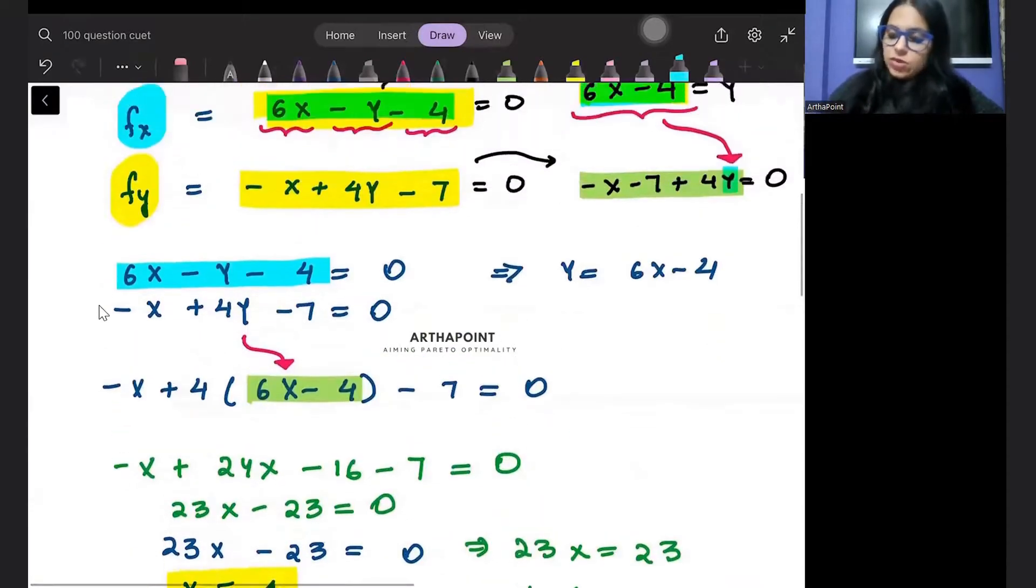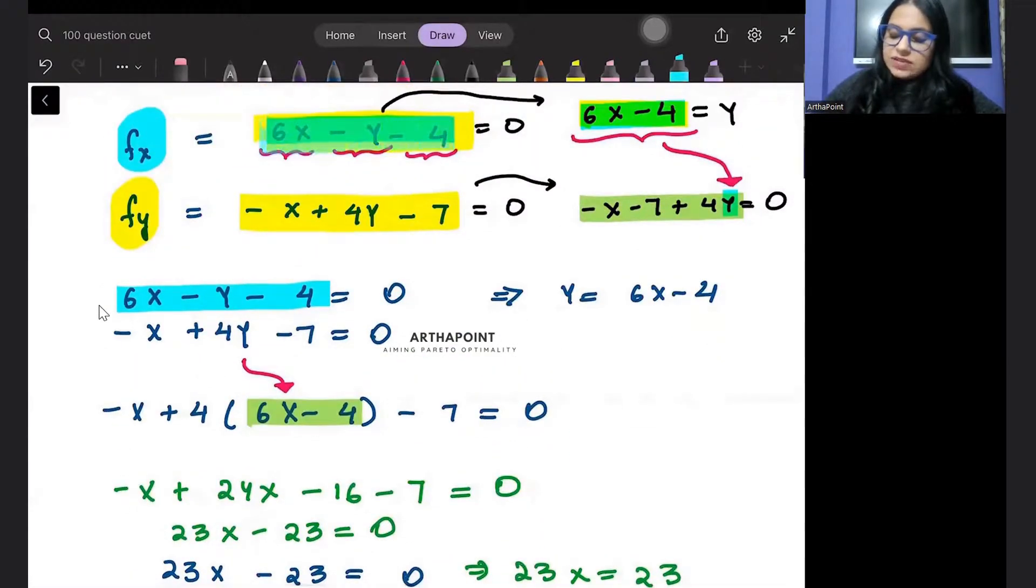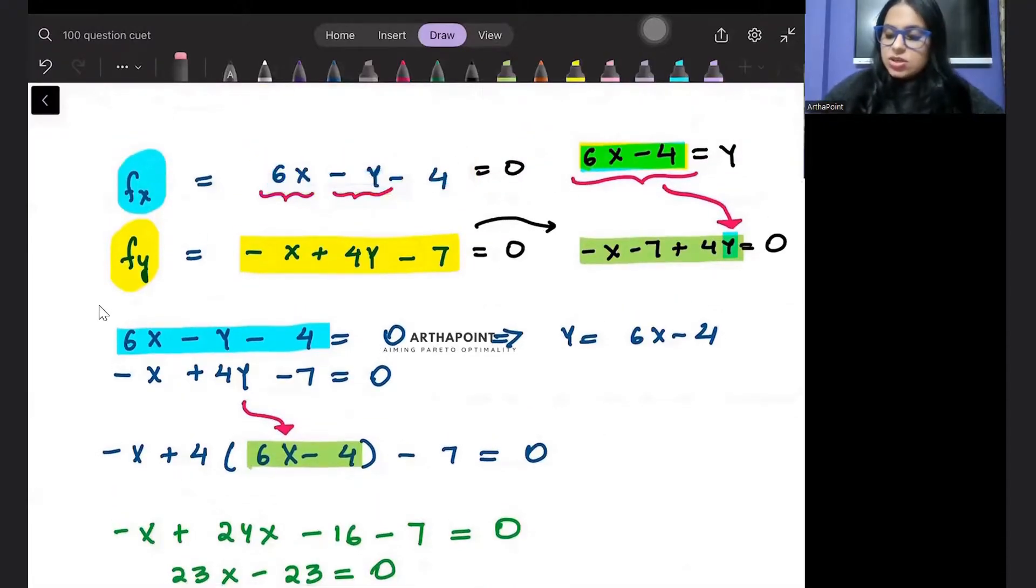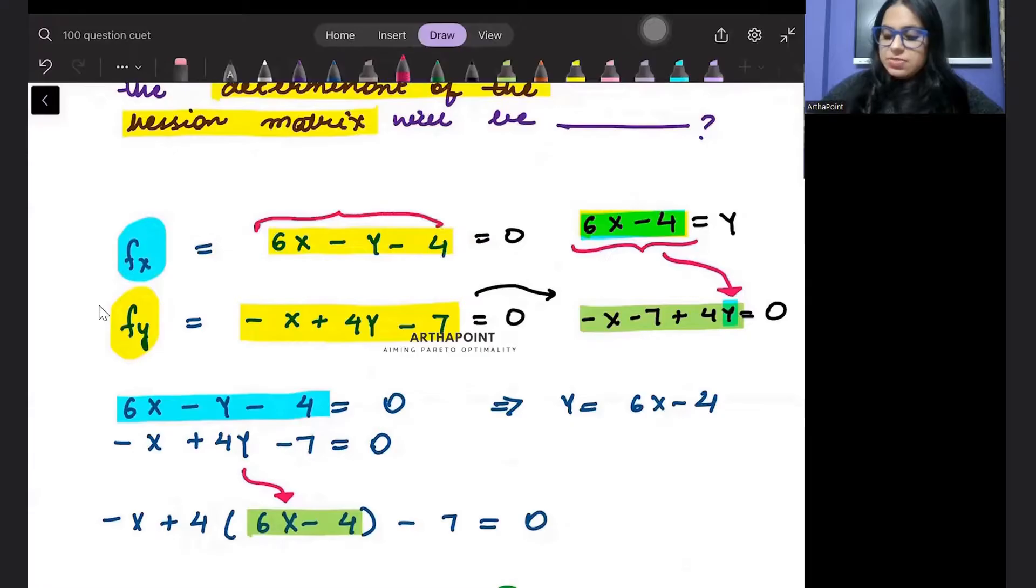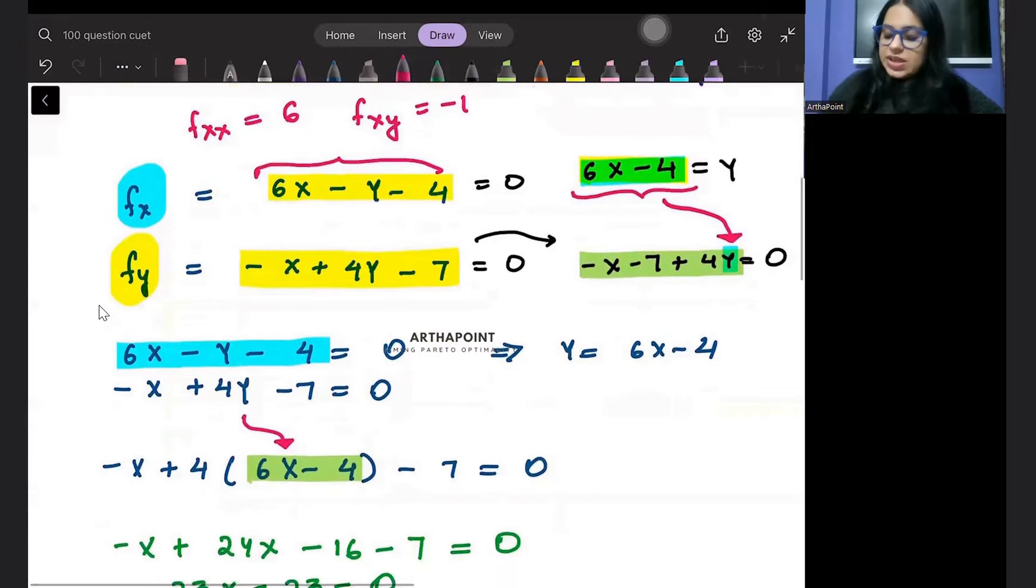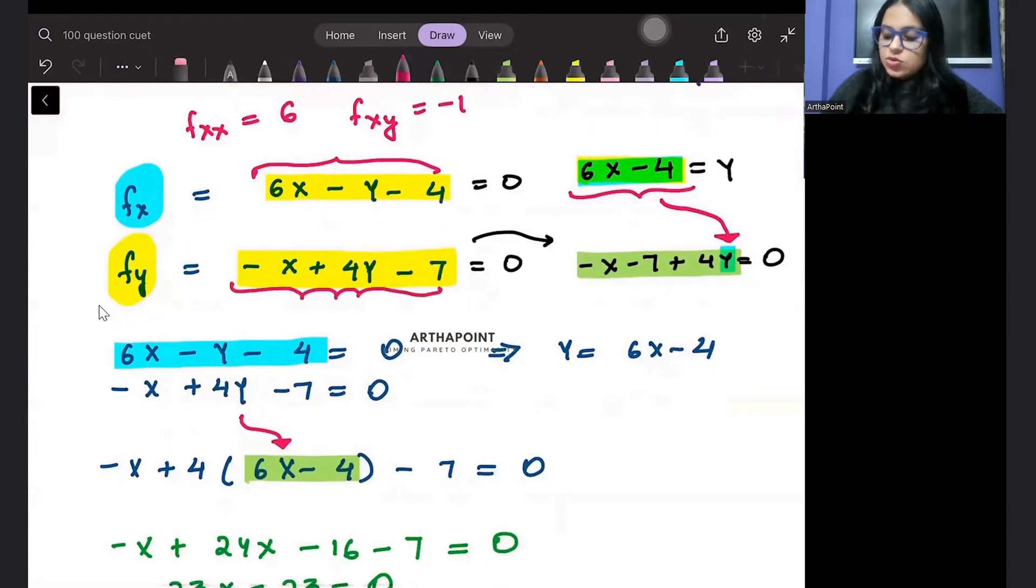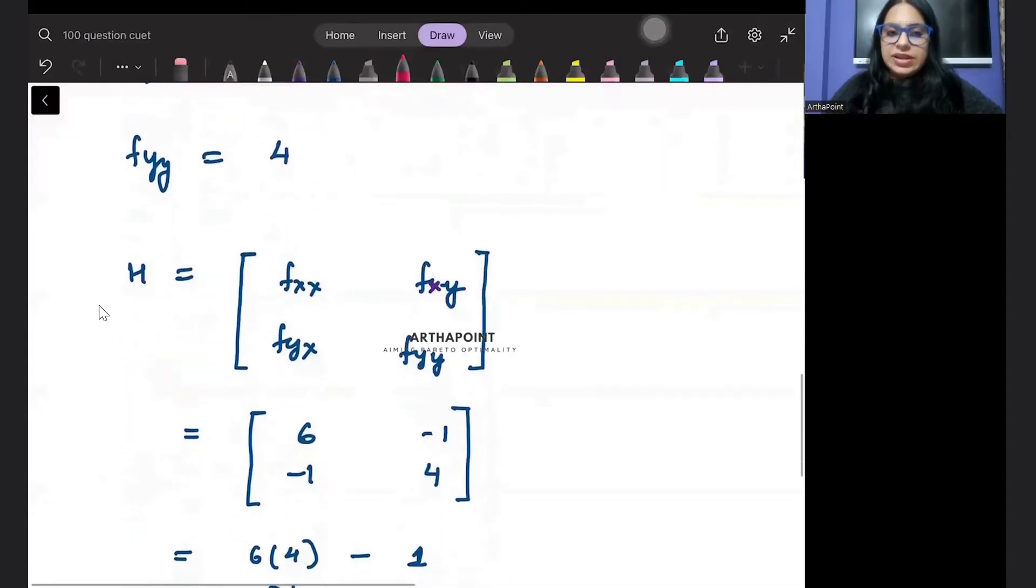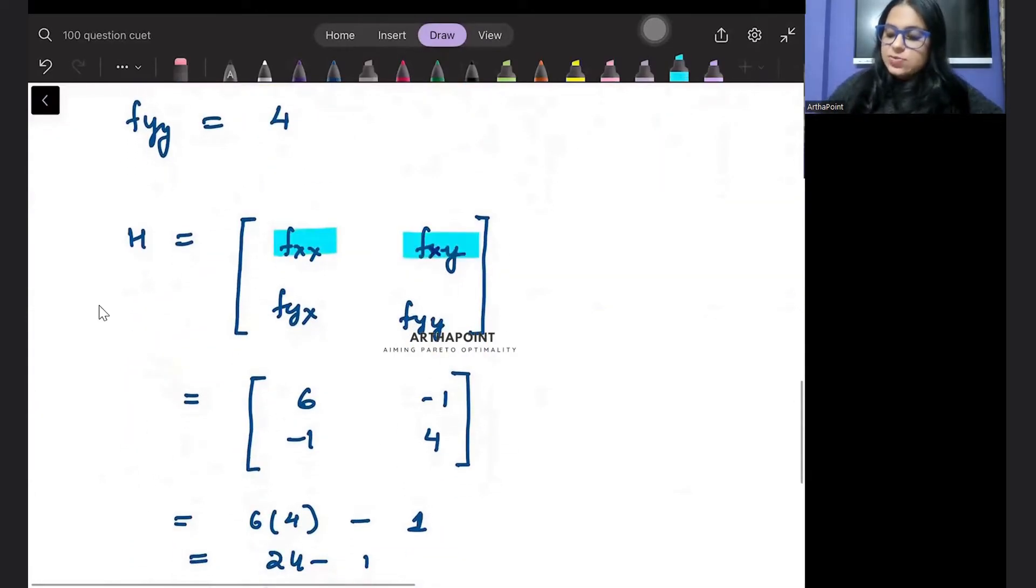Now we will find the double derivative. If I just differentiate this again with respect to x, I'll get fxx. So if I differentiate this equation with respect to x again, I will get 6. And if I differentiate this with respect to y, I will get minus 1. If I differentiate this with respect to y, I will get 4. So I am finding the double derivative and I have fxx, fxy, fyx, fyy. And this becomes 6, minus 1, minus 1, 4.